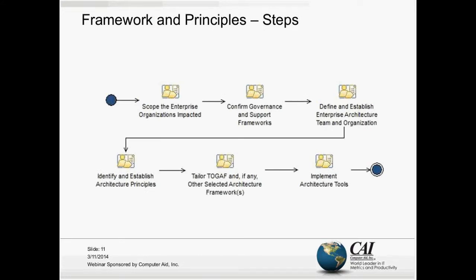In the Preliminary Phase, 'Framework and Principles,' the ADM describes a high-level six-step process for establishing the architecture capability. The first step is to scope the enterprise organizations that are impacted — understanding the scope of architecture influence. When establishing the architecture capability, we need to identify where we will and will not be doing enterprise architecture work, and which parts of the organization will be impacted by the new architecture capability.